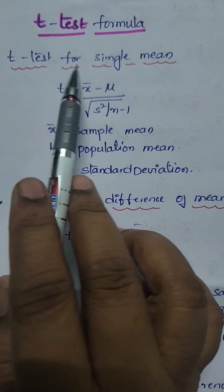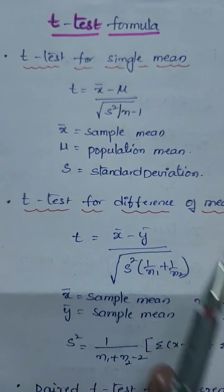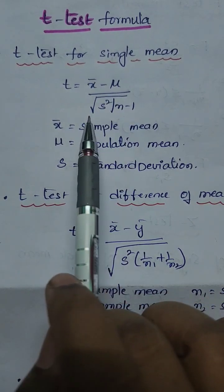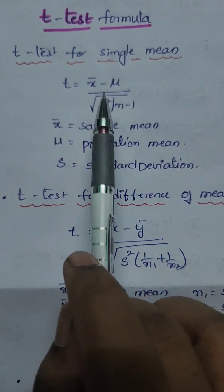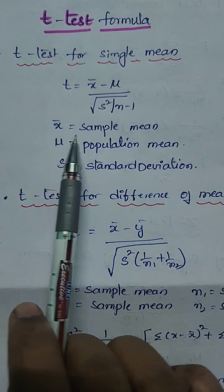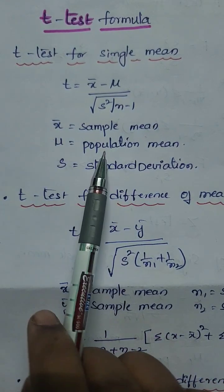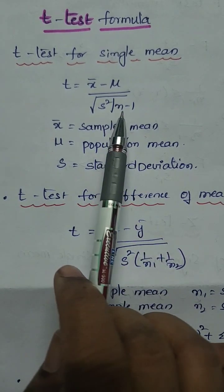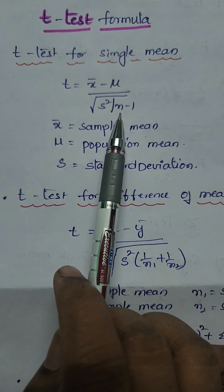First one is t-test for single mean when only a single sample is there. t equals x bar minus mu upon square root of s square by n minus 1. Here x bar is sample mean and mu is population mean, s is standard deviation and n is number of observations.